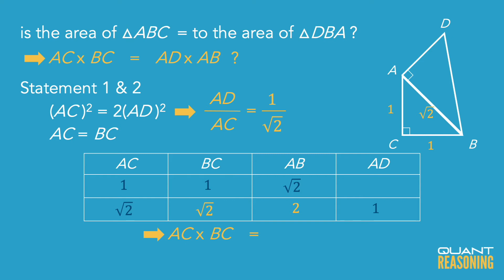We wanted to know AC times BC. That works out to 2, because square root of 2 times square root of 2 equals 2. And AD times AB also works out to 2, because AD was 1 ratio unit and AB was 2 ratio units. The product is 2, and therefore it turns out that, yes, these two triangles do have the same area, and the correct answer is C.